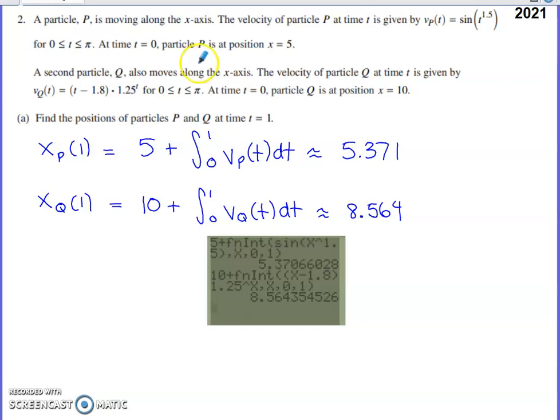This question involves two particles moving along the x-axis. For particle P, they give us the velocity function for particle P. They tell us that velocity function holds from zero to pi. And then they give us the initial position of particle P. It's at x equals five at time zero.